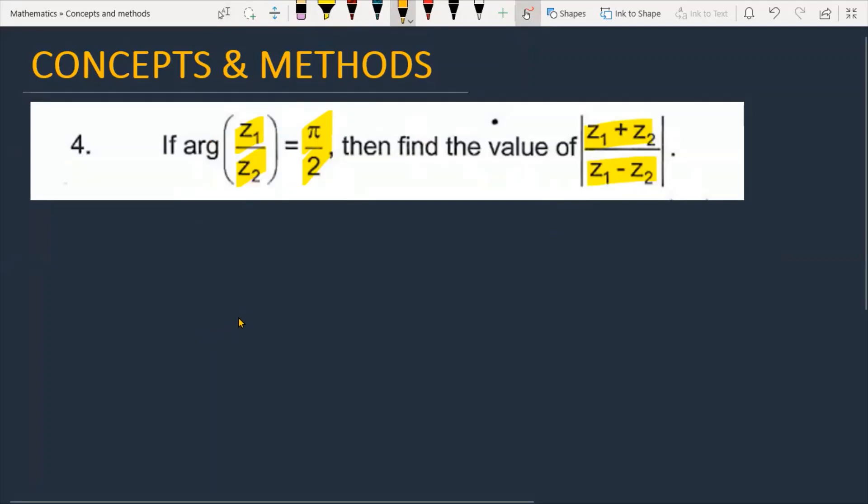Before solving the problem, I will discuss the concept. Suppose we have z1, z2, z3, and suppose the angle between them is alpha.